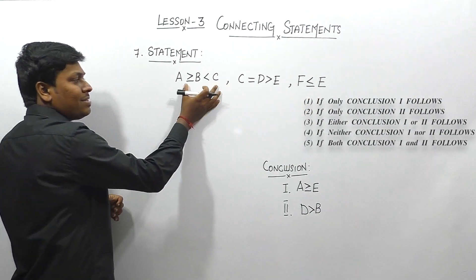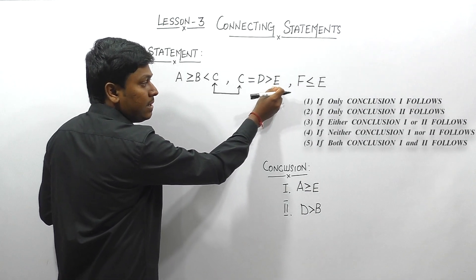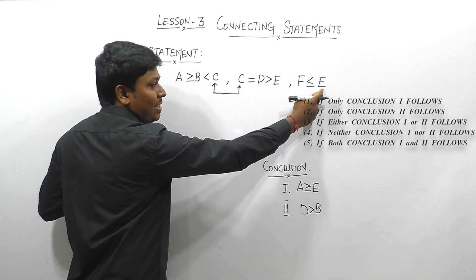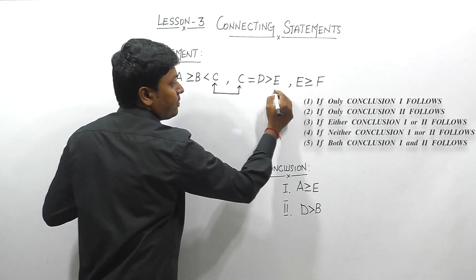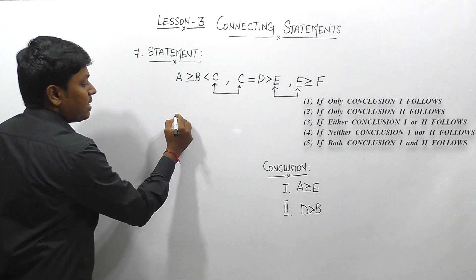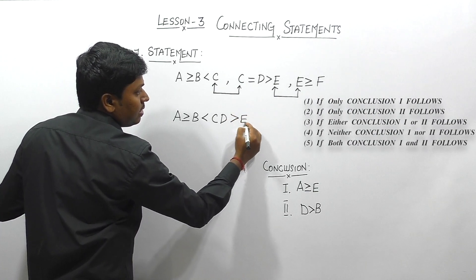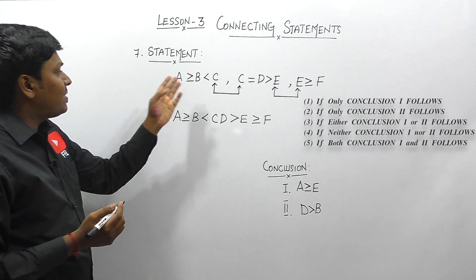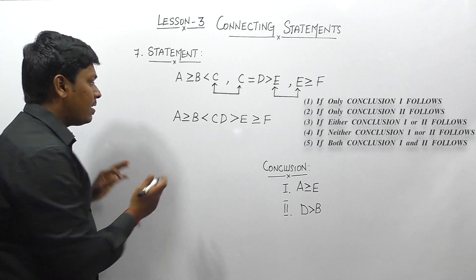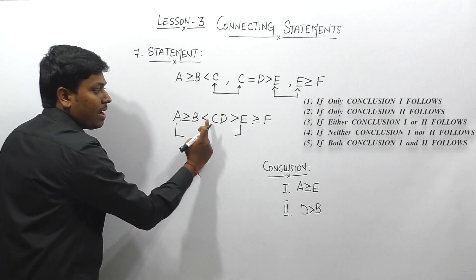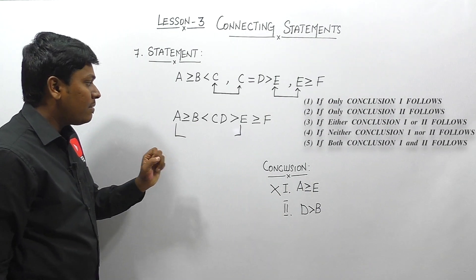Question 7 has three statements. Statement 1 ends at C and statement 2 starts at C. Statement 2 ends at E but statement 3 starts at F; however, F ≤ E is the same as E ≥ F, so we rewrite it as E ≥ F to connect. The single expression is: A ≥ B < C = D > E ≥ F. C and D are equal (CD).